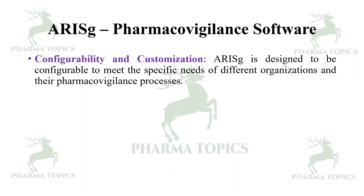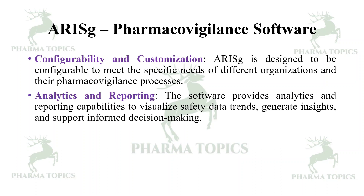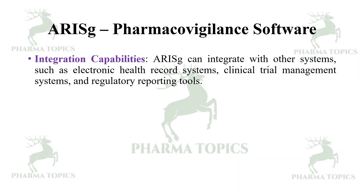RSG is designed to be configured to meet the specific needs of different organizations and their pharmacovigilance processes. Analytics and reporting: RSG provides analytics and reporting capabilities to visualize safety data trends, generate insights, and support informed decision making. Integration capabilities allow RSG to connect with other systems such as electronic healthcare record systems, clinical trial management systems, and regulatory reporting tools.